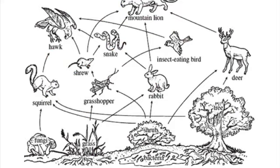The food web is more complicated than a food chain because there are several chains within the food web. For instance, it still starts with a plant, but that plant might be eaten by a deer that might be eaten by a mountain lion. But that same plant might be eaten by a rabbit, and that rabbit might be eaten by a snake, or the mountain lion, or some other type of predator. So there are several different chains within a web.